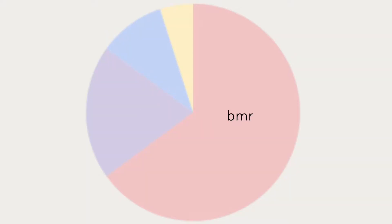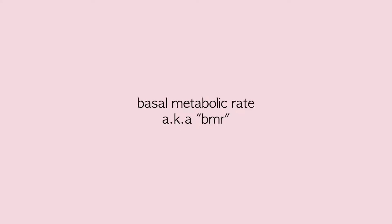Your metabolism can be broken into four sections. The first and biggest is your Basal Metabolic Rate — literally the calories your body burns just to stay alive. At any given moment your heart is beating, your lungs are breathing, your cells are regenerating, your hair and nails are growing. All of that takes a lot of energy, and that energy is your BMR.